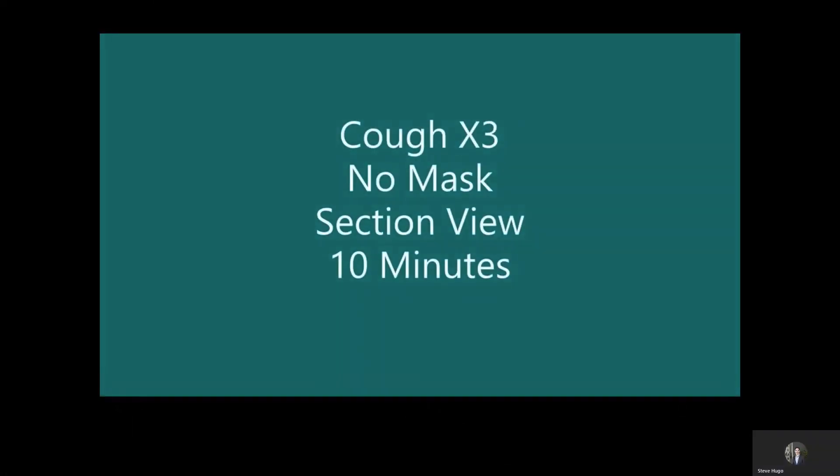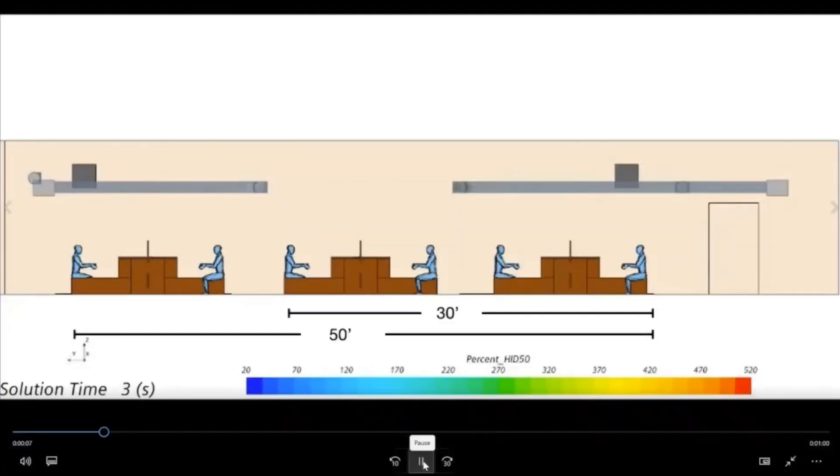We modeled a number of scenarios trying to decide how Holt Architects would return to the office. Staff wanted to know if they'd be allowed to remove their masks when seated at their workstations, and for that reason our first model represents an unmasked person coughing three times in about a 10 minute period.